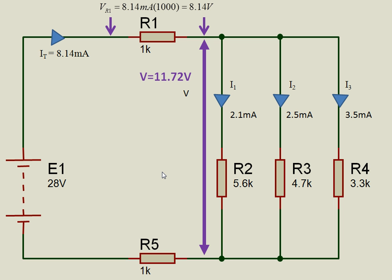Now, let's look at the voltages. So the voltage across R1 is the current, 8.14 milliamps, multiplied by 1,000 ohms, which gives me 8.14 volts. I'm going to have a similar voltage down here, which is 8.14 volts. And I've already determined that the voltage across here, from that point to that point, across the parallel network, is 11.72 volts.